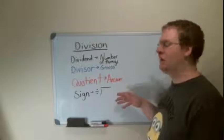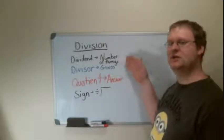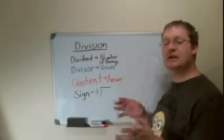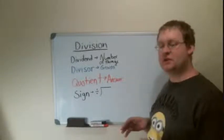When you do any division problem, it's going to have four parts. It's going to have a dividend, which is a number of things, a divisor, which is the group that you're going to split the dividend into, and then your quotient is your answer.